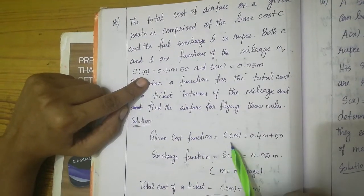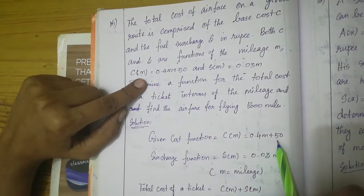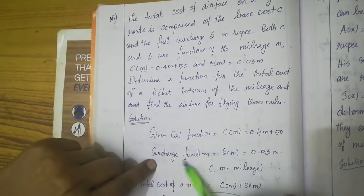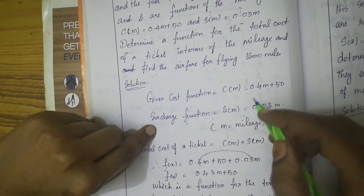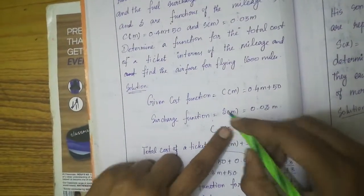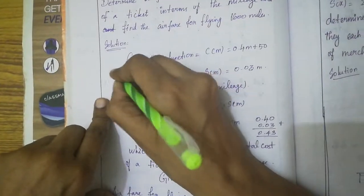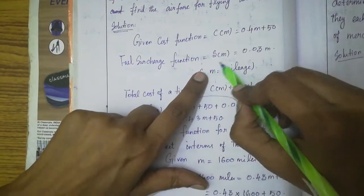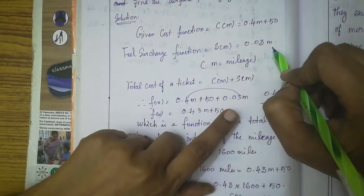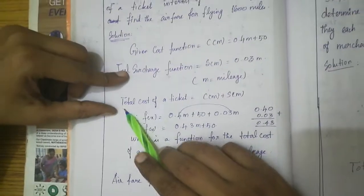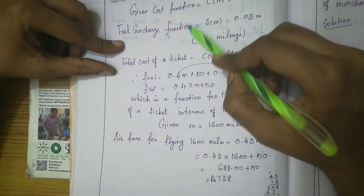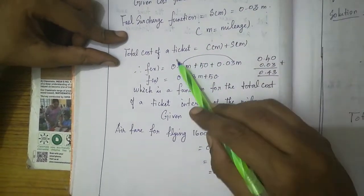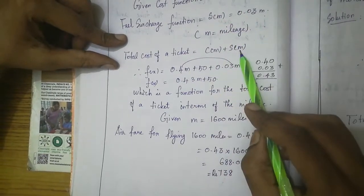Given: cost function C of M equals 0.4M plus 50, and S of M equals 0.03M for mileage.